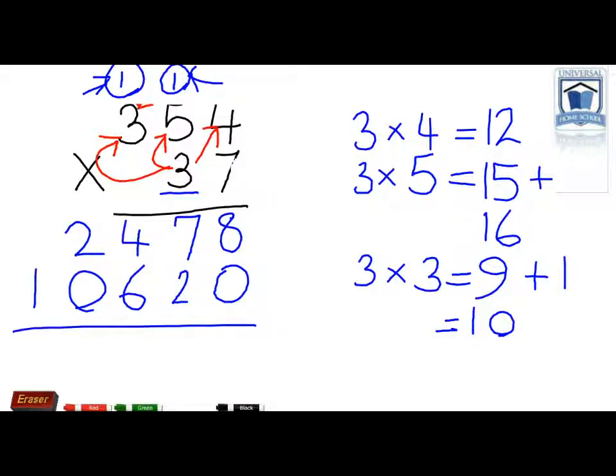Then we add these two numbers up. 8 plus 0 equals 8, 7 plus 2 equals 9, 6 plus 4 equals 10, 2 plus 1 equals 3, and 1. Of course, don't forget to put the comma after the 13.